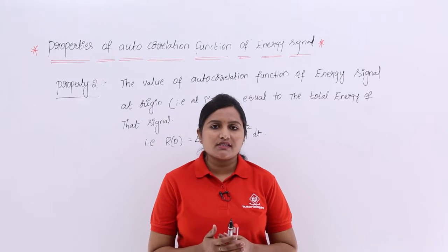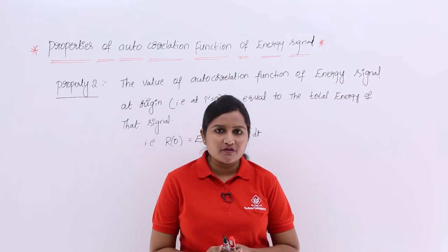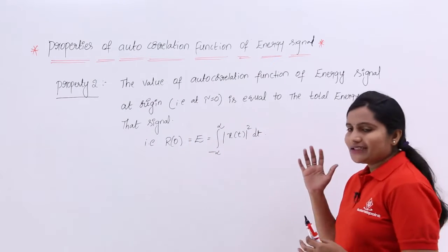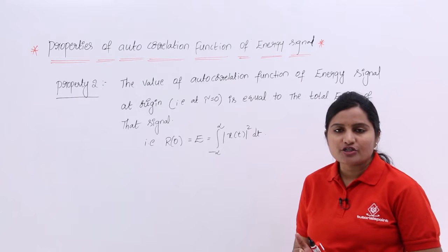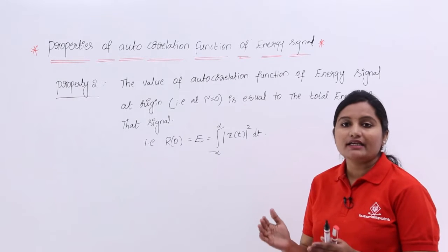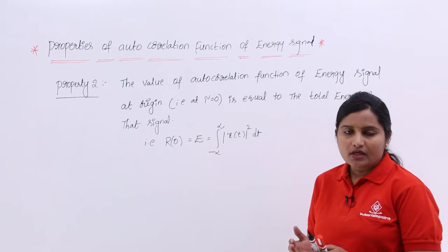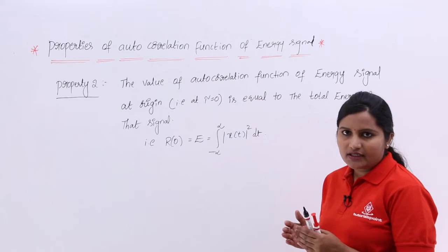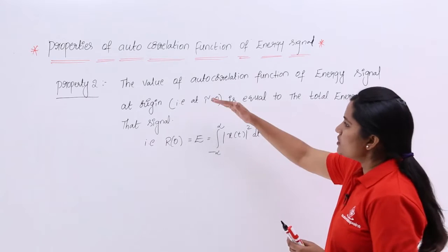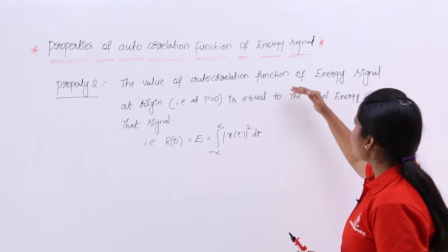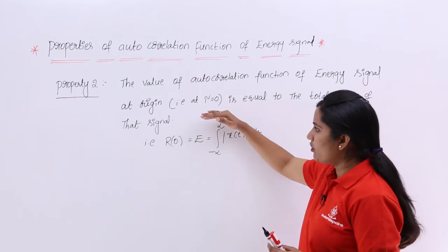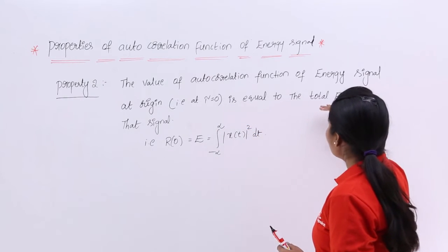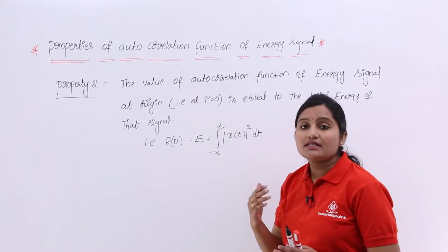In this video we are going to discuss Property 2 of the autocorrelation function of an energy signal. This property states that the value of the autocorrelation function at the origin — that is, at τ equal to 0 — gives the total energy of the signal.